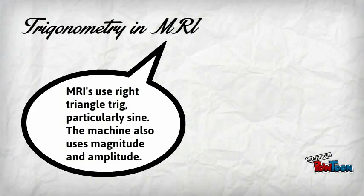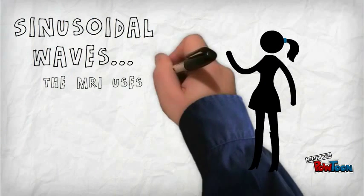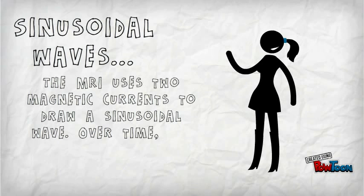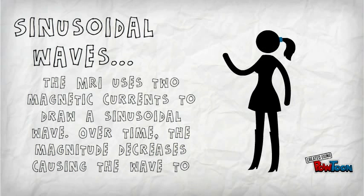MRIs use right triangle trigonometry, particularly sine. The machine also uses magnitude and amplitude. The MRI uses two magnetic currents to draw a sinusoidal wave. Over time, the magnitude decreases causing the wave to dampen.